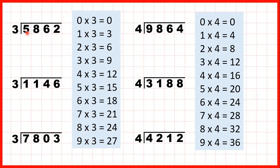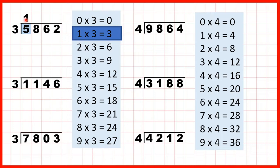We start by taking the first digit, and that's a 5, so we're looking for a number in the 3 times table that's 5 or less. So we need to choose 1 times 3, because 2 times 3 is 6 and that would be too many. So because we've chosen 1 times 3, we have 1 in our answer line. But 1 times 3 is 3 and we're dividing 5. Now 5 is 2 more than 3, so if we count on 2 we get to 5, and that tells us that our remainder is 2.